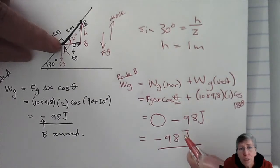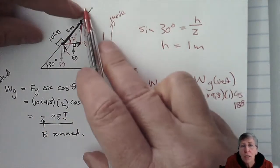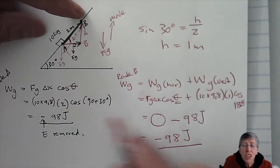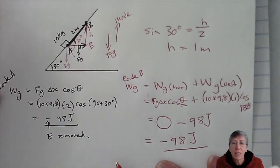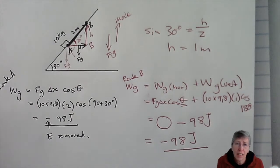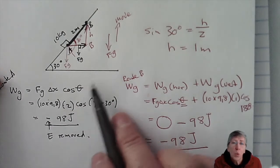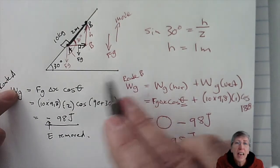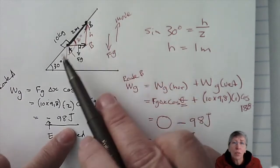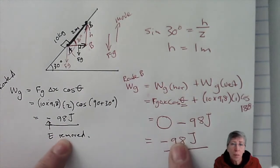So it doesn't matter if I move in a straight line (Route A) or Route B — the work done by gravity is exactly the same: minus 98 joules. The work done by a conservative force is independent of the path between two points, regardless of how you move between A and B.